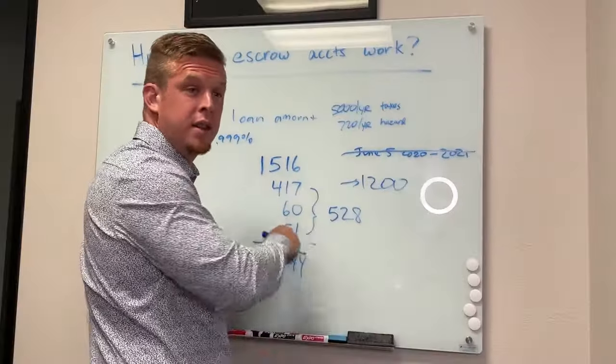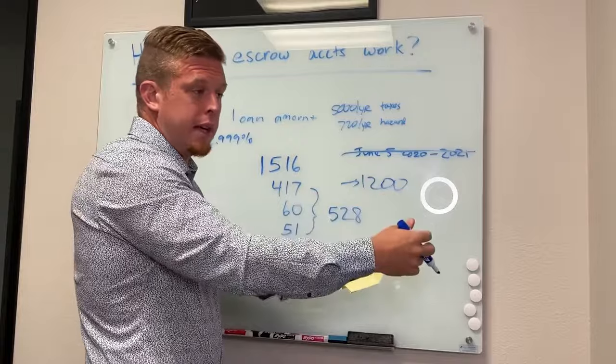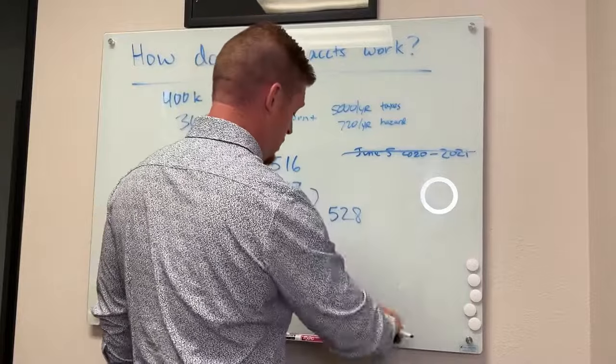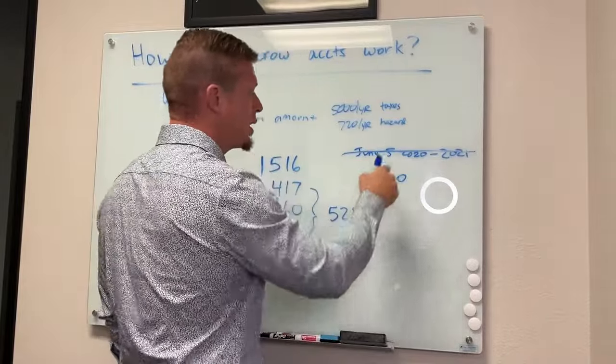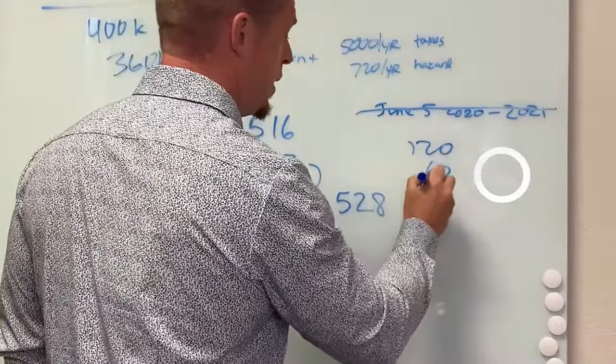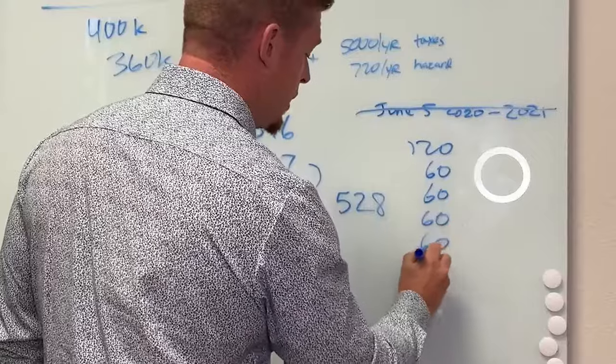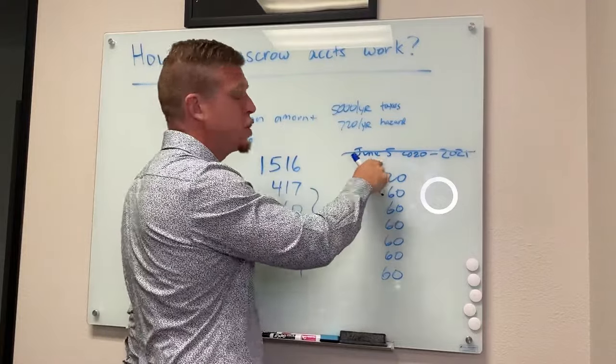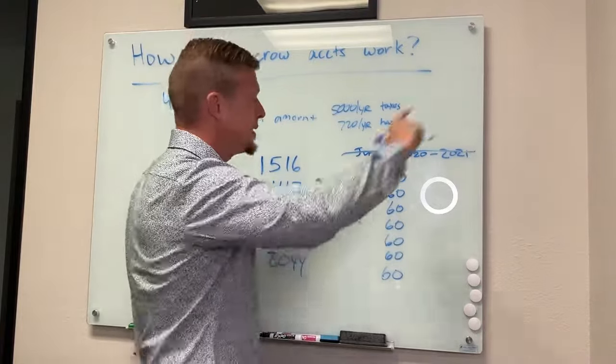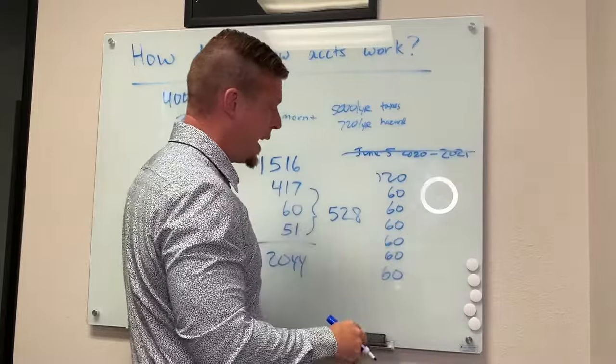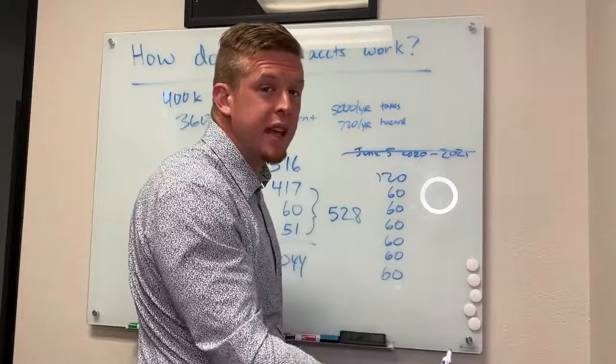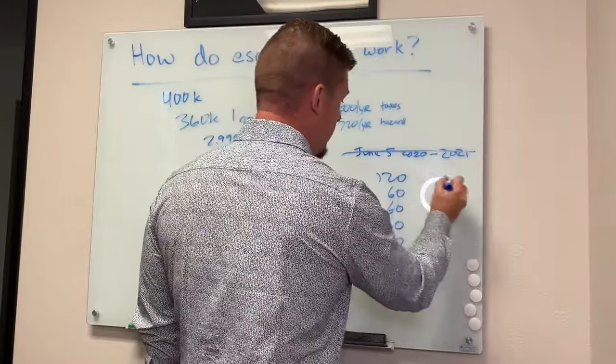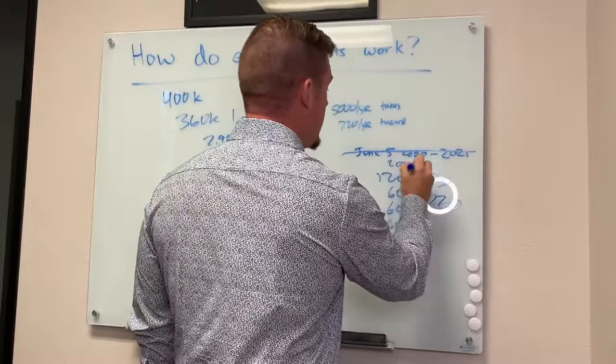Now they also collect a couple months of reserves, a little buffer so that, let's say they collect two months. They've got $120 in there. Your August 1st payment comes due, $60 more, September, October, November, December, January. Come next May, early May, they're going to say, oh, we've got a June 5th homeowner's due. Let's disperse. Now this account is probably going to have $720, $780, maybe $800 bucks. They can't withhold too much. They have a limit on how much they can hold. And then dispersed $720 to pay 2021 to 2022.